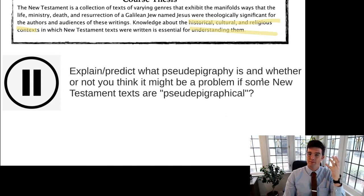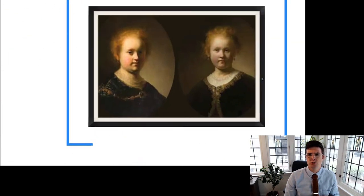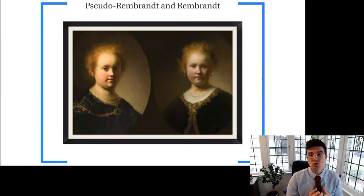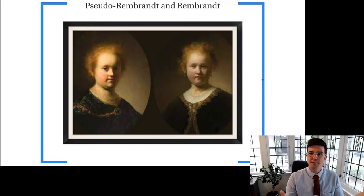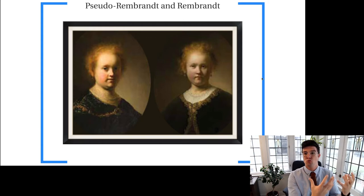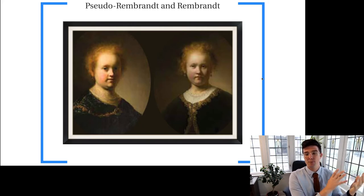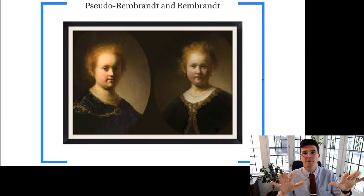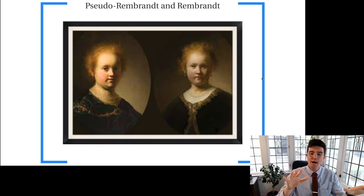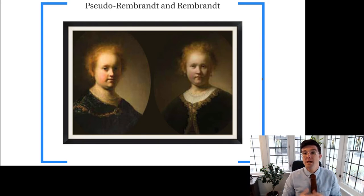I'm going to lay out my take on pseudepigraphy by starting with these two Rembrandts. One is a pseudo-Rembrandt and one is a real Rembrandt — can you tell which one is the actual Rembrandt? If you're anything like me, you'd probably assume the one on the left. When I look at these two images, the one on the left draws me in more, possibly because of the brightness. But art historians say the one on the right is the real Rembrandt, and the one on the left is the fake.